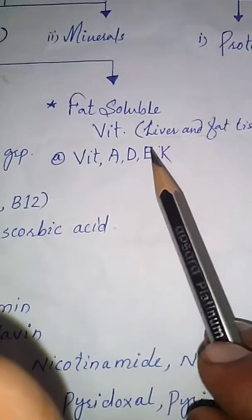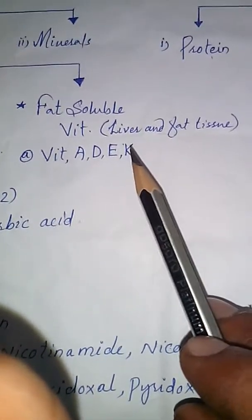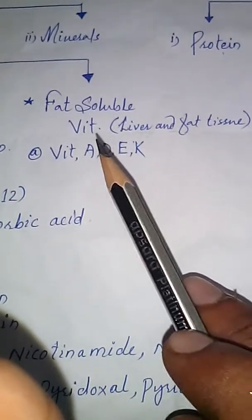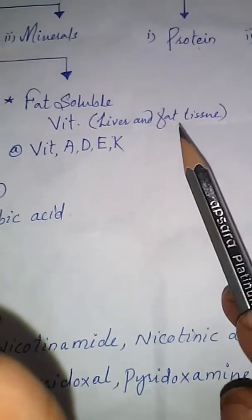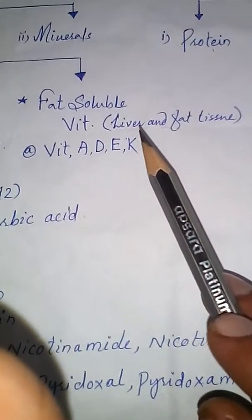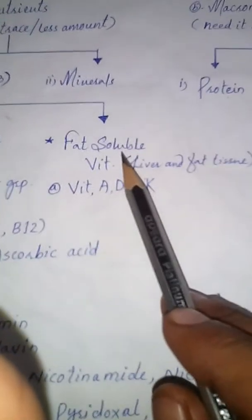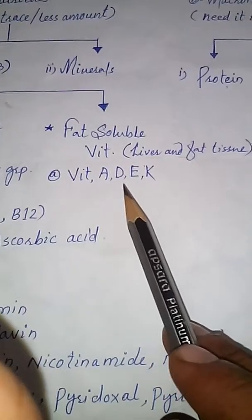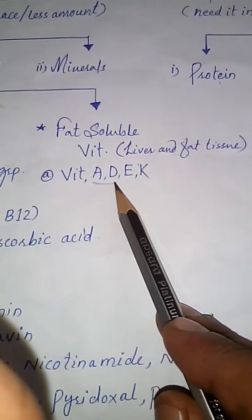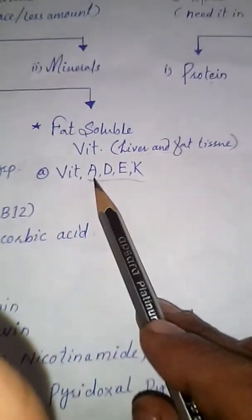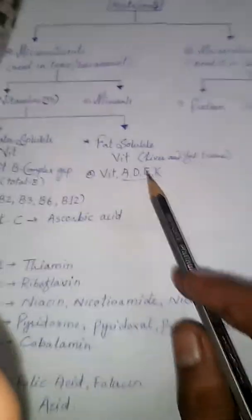The other type of vitamin is fat soluble vitamin. Our body stores these fat soluble vitamins, and if not in use, they are stored in our liver and fat tissue. Whenever we need energy, they are used from the liver and fat tissue. The fat soluble vitamins are vitamin A, vitamin D, vitamin E, and vitamin K. A useful logic to remember them is 'ADEK' — A, D, E, and K.